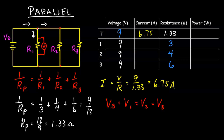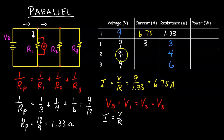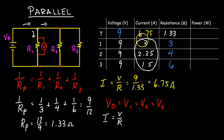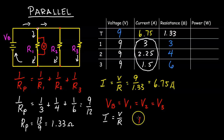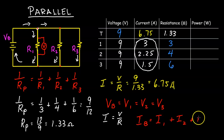To calculate the current through each branch, we use Ohm's Law: voltage divided by resistance. So 9 divided by 3 equals 3 amperes, 9 divided by 4 equals 2.25 amperes, and 9 divided by 6 equals 1.5 amperes. Another characteristic of a parallel circuit: the current through the battery equals the sum of the currents through the branches — I_R1 plus I_R2 plus I_R3. Adding 3 plus 2.25 plus 1.5 gives us the total current of 6.75 amperes.